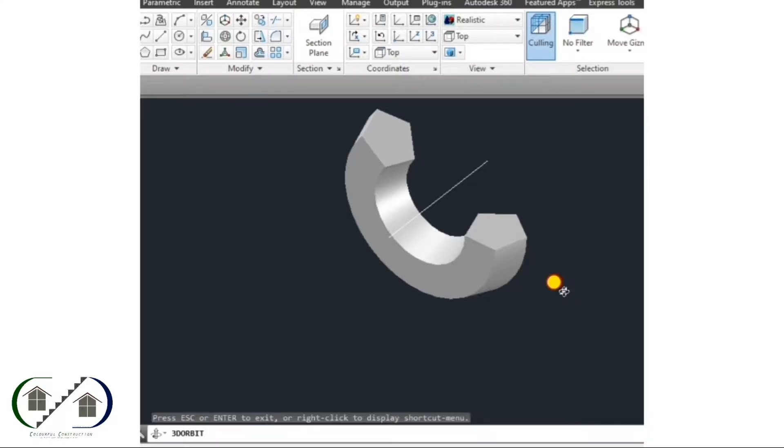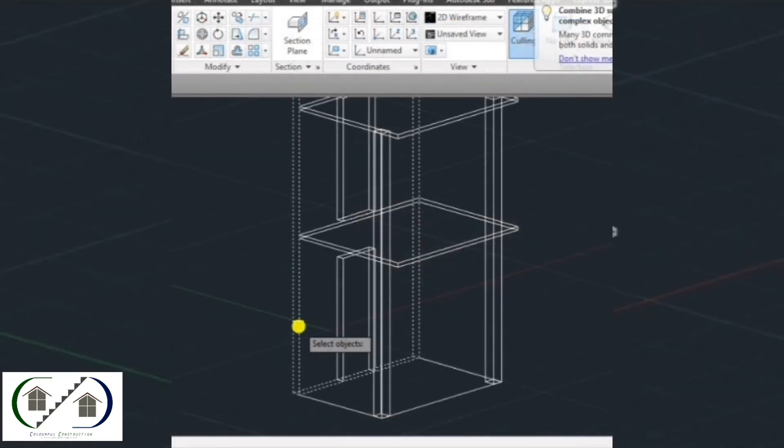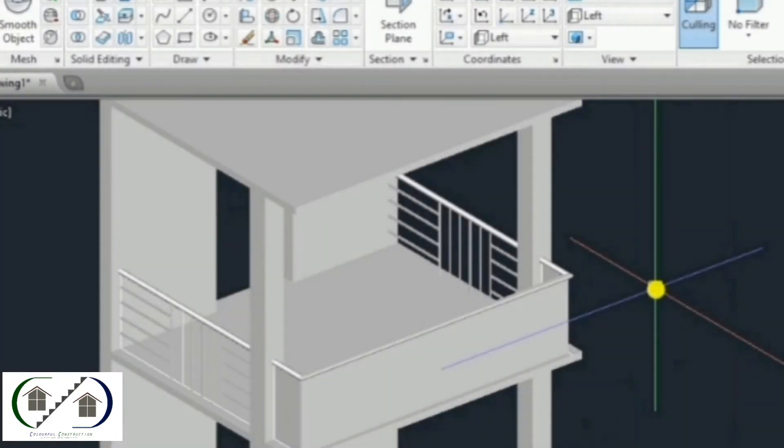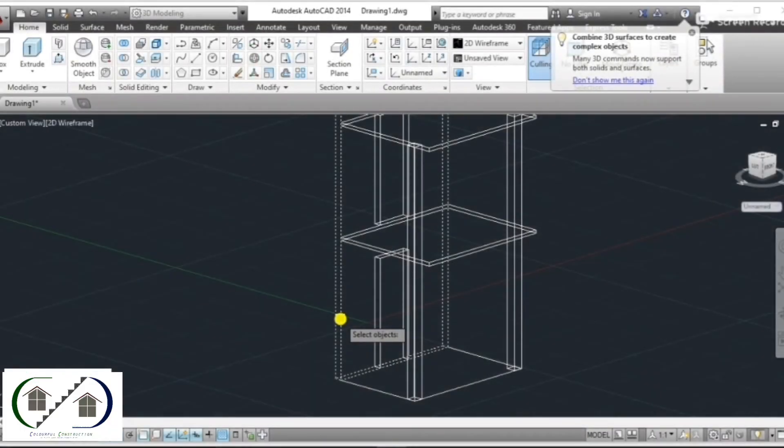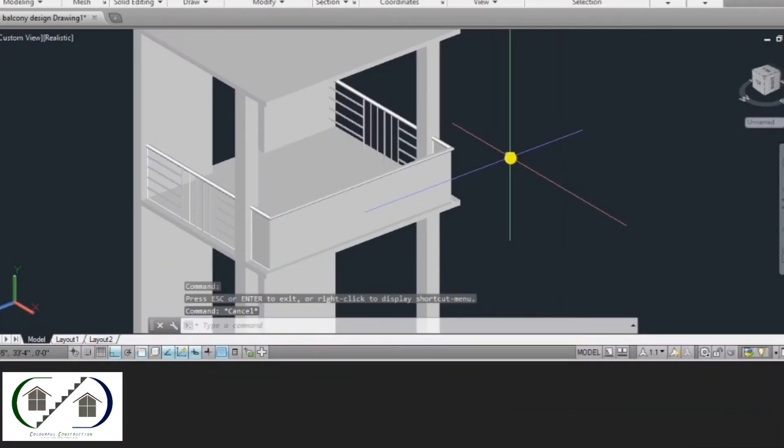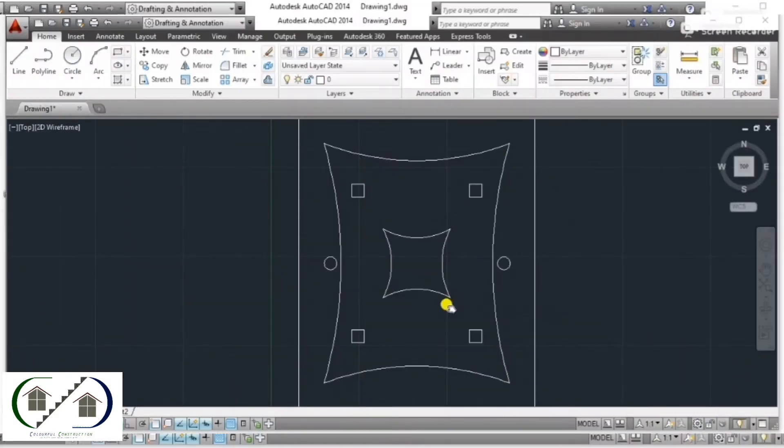Civil engineers design, construct, supervise, operate, and maintain large construction projects and systems, including roads, buildings, airports, tunnels, dams, bridges, and systems for water supply and sewage treatment. Many civil engineers work in design, construction, research, and education.